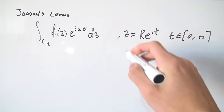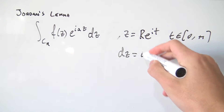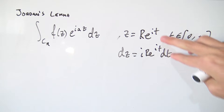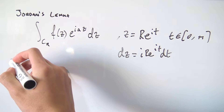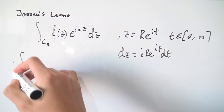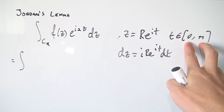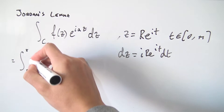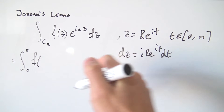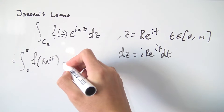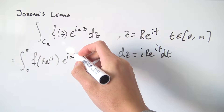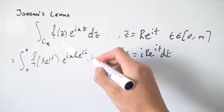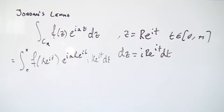Differentiating both sides, we get dz = ire^(it) dt. Now we can plug all this into our integral. The integral becomes an integral from 0 to π of f(re^(it)) times e^(iare^(it)), and then dz becomes ire^(it) dt.